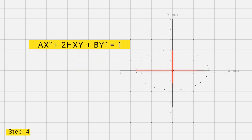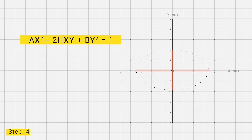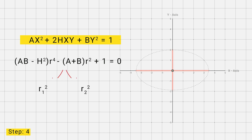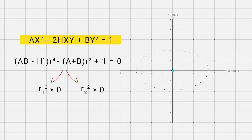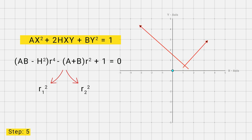Our next step is to find the lengths of the axes. The squares of the lengths of the semi-axes are given by a specific equation. Let r1 squared and r2 squared be the two roots. If both r1 squared and r2 squared are greater than 0, then 2r1 and 2r2 are the lengths of the major and minor axes of the ellipse. If one is positive and the other is negative, the length of the transverse axis is 2r1 and the length of the conjugate axis is 2 times the square root of the modulus of r2 squared. If both roots are positive the equation represents an ellipse, and if one root is negative it represents a hyperbola.